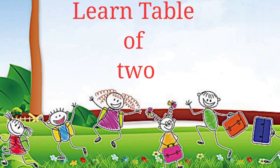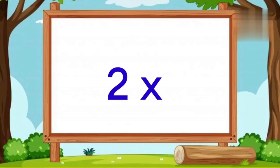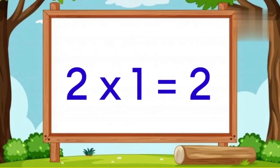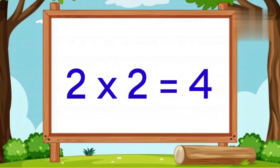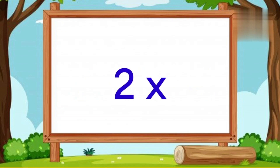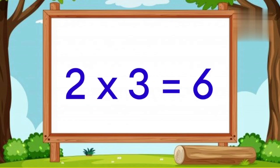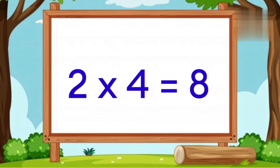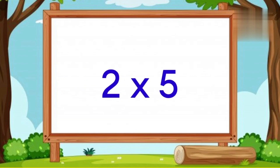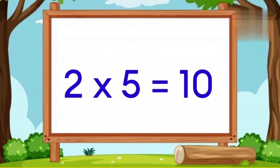Let's learn the table of 2. 2 1's are 2. 2 2's are 4. 2 3's are 6. 2 4's are 8. 2 5's are 10.